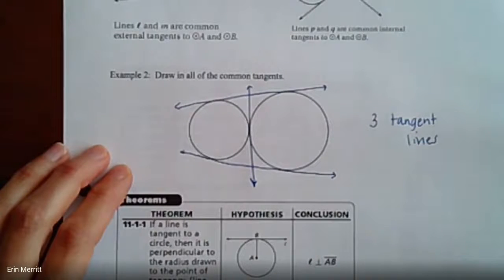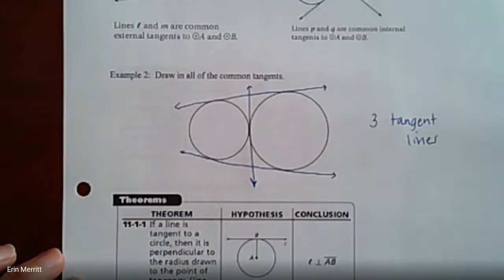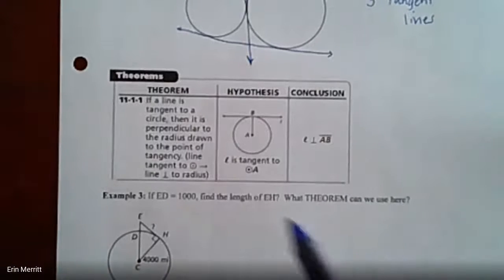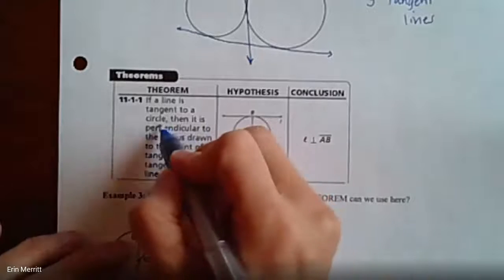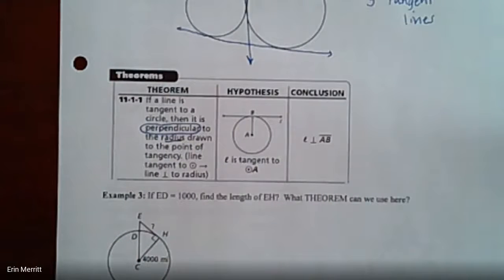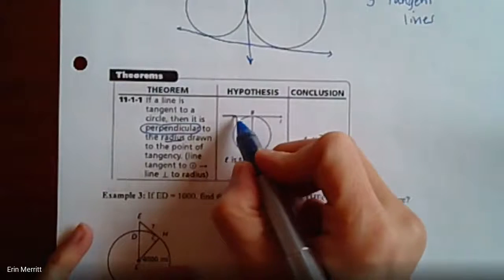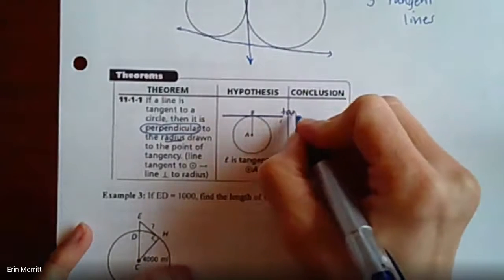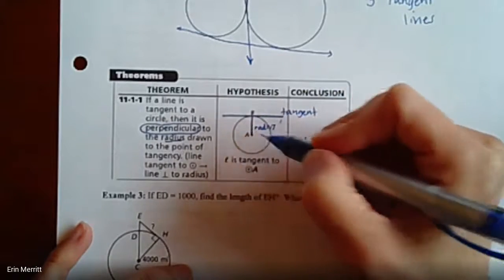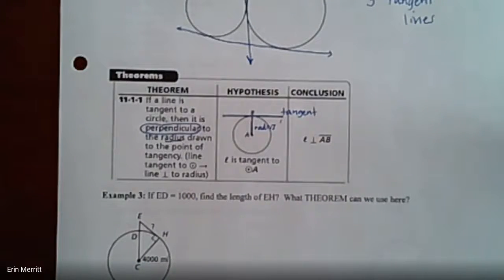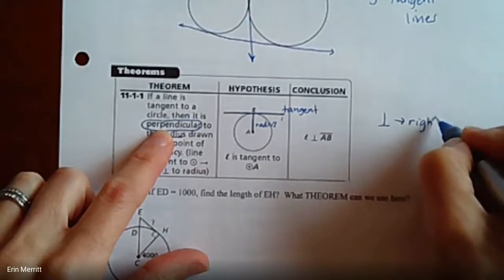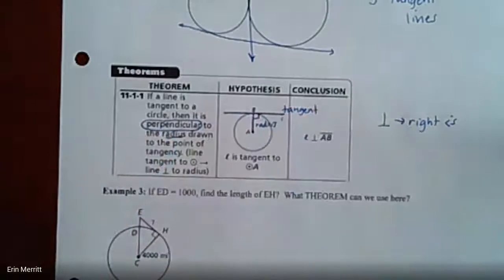An important concept: if a line is tangent to a circle, then it is perpendicular to the radius drawn to the point of tangency. Looking at the diagram, the tangent line and the radius — the part coming from the center of the circle out to the edge — meet at the point of tangency and are perpendicular, meaning they form a right angle right there.